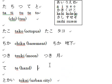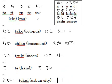Next word is て — Te. Te means hand. Then the kanji for hand is this one. OK, はい。Lastly, TOKAI.